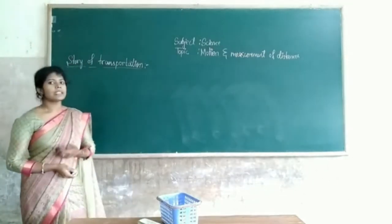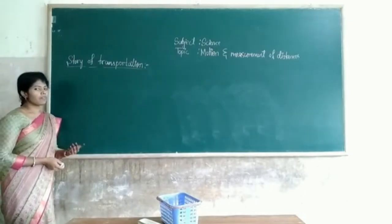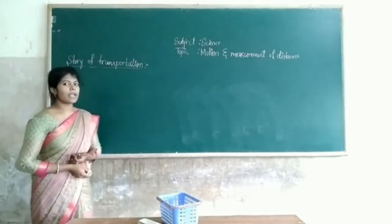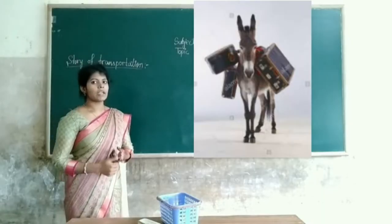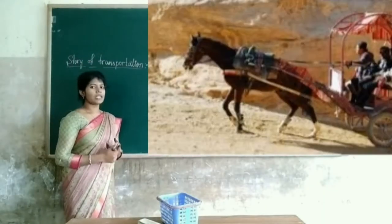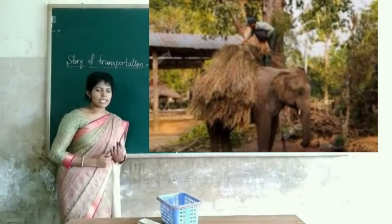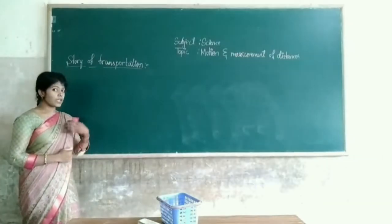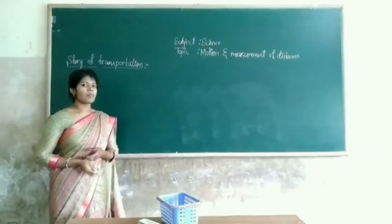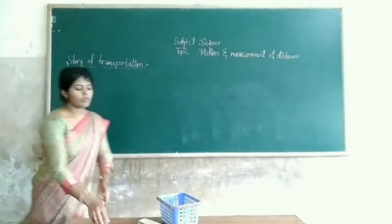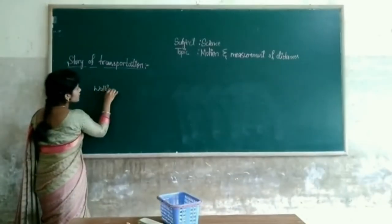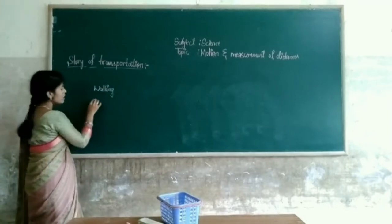Animals carried things from one place to another place. Which animals were used to carry things? Donkey, horse, elephants, camels — these are the animals used to carry objects from one place to another place. First, human beings started by walking, then they started utilizing animals.